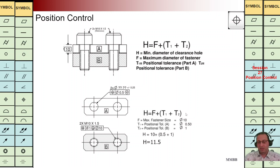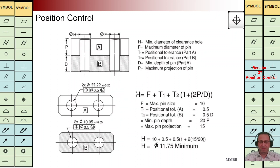The formula is: H equals F plus T1 plus T2. F is the maximum diameter of the fastener — it is 10. T1 is 0.5, T2 is 1. We can calculate what should be the hole diameter for part A — it is 11.5 mm.